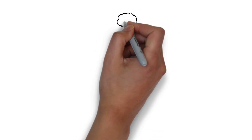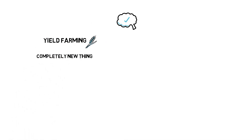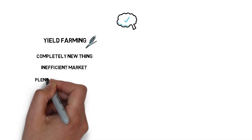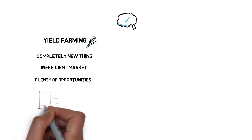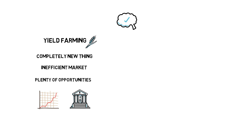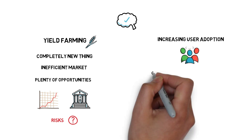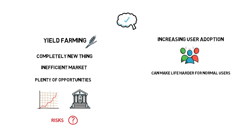Yield farming is a completely new thing and it's far from being a fully efficient market, so there are plenty of opportunities that can bring a substantially better return on capital than what we can find in traditional finance or even centralized crypto finance. This comes with certain risks, some of which we may not even be aware of yet. Although yield farming has good potential for increasing user adoption and attracting more people to use DeFi protocols, it can also make life harder for normal users — for example, users may see borrow rates on Compound changing dramatically without being aware of the intricacies of different COMP token distribution strategies.